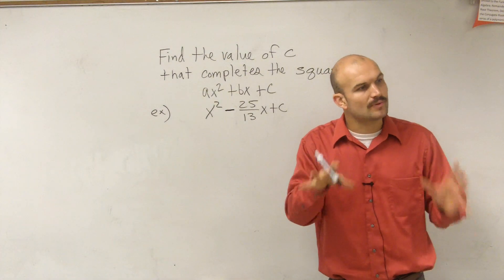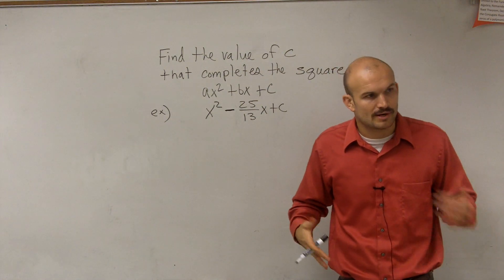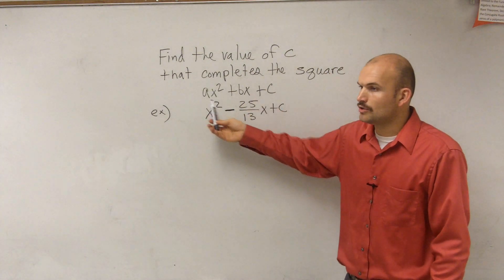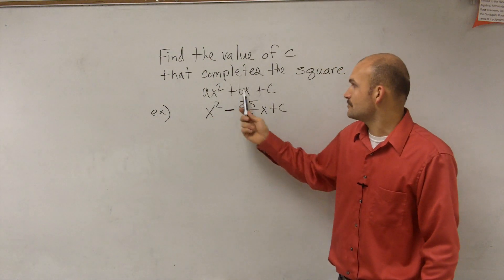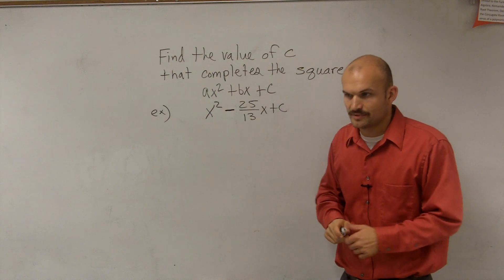The main important thing we just want to practice right now is finding that value of c. Because if you can't find the value of c, you can't complete the square. So remember, all quadratics in quadratic form, we have ax squared plus bx plus c. So I've got to be able to find the value of c that's going to help us complete the square.